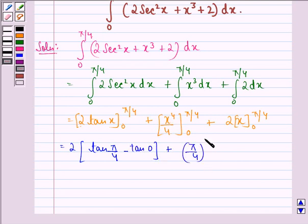The whole raised to power 4 minus 0, this whole multiplied by 1 by 4, plus 2 into pi by 4 minus 0.